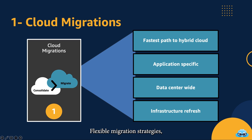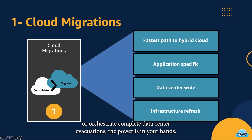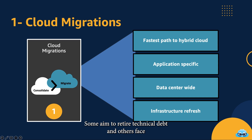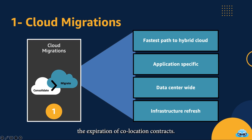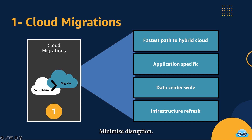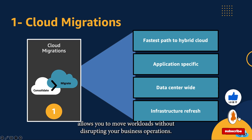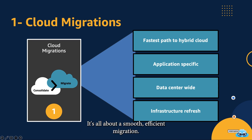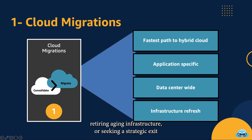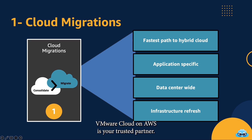Flexible Migration Strategies — whether you need to migrate specific applications or orchestrate complete data center evacuations, the power is in your hands. Some customers seek to consolidate data centers, some aim to retire technical debt, and others face the expiration of co-location contracts. VMware Cloud on AWS is designed to meet these diverse needs. Minimize Disruption — the transition doesn't have to be disruptive. VMware Cloud on AWS allows you to move workloads without disrupting your business operations. It's all about a smooth, efficient migration. Whether you're pursuing a cloud-first strategy, retiring aging infrastructure, or seeking a strategic exit from a co-location facility, VMware Cloud on AWS is your trusted partner.